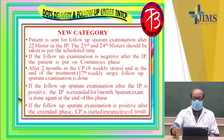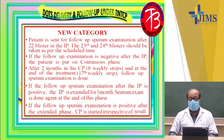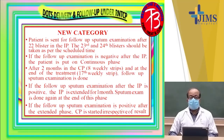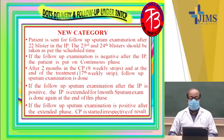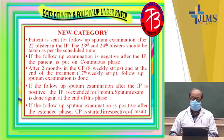The category 1 patient is sent for follow-up sputum examination after the 22nd blister pack is finished in the intensive phase. The 23rd and 24th blisters are taken as per schedule. If the follow-up examination is negative after the 22nd blister pack, the patient is put on the continuation phase after consumption of the 24th pack. After 2 months in the continuation phase, again at the end of the 17th weekly strip, follow-up sputum examination is done. If the follow-up sputum after the IP is positive, the IP is extended for 1 month and sputum examination is done again at the end of that phase. If still positive after the extended phase, the CP is started irrespective of the result.